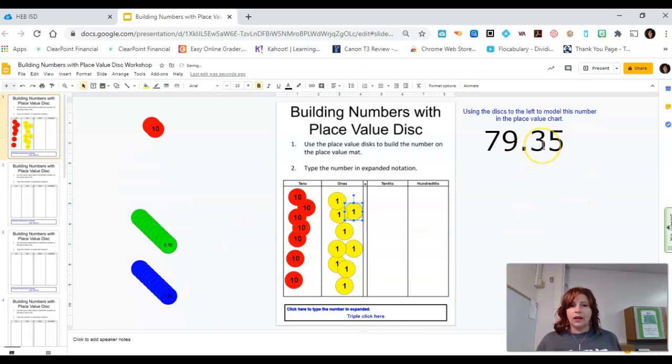Then I'm going to need 3 of the tenths place. That's 1, 2, 3, and 5 of the hundredths place. 1, 2, 3, 4, and 5.